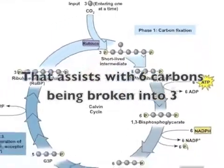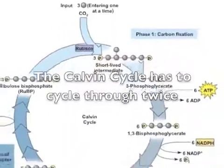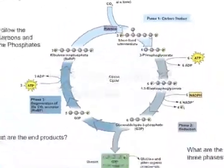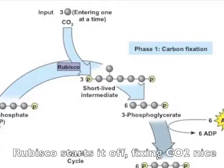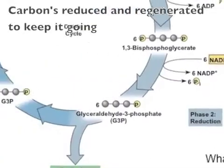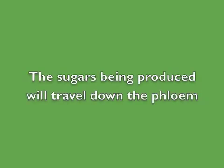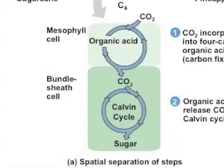Glucose has 6 carbons broken into 3. The Calvin cycle has to cycle through twice. RuBisCO starts it off, fixing CO2. The carbon is continually regenerated to keep the cycle going.